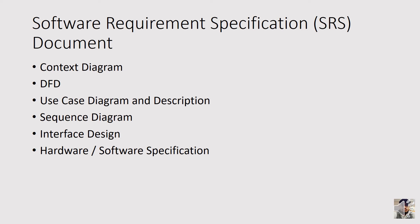The next part covers the SRS — Software Requirement Specification Document — and also the Software Design Description Document. This is specifically for Software Engineering students. These are the elements you need in your SRS. I already uploaded the template, which you can customize based on elements relevant to your project. First and foremost, an SRS document requires a context diagram, which shows the interaction of the user with the system and the data flowing through it.